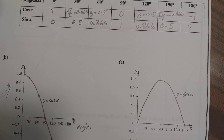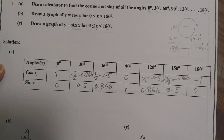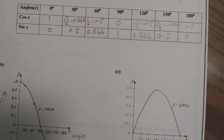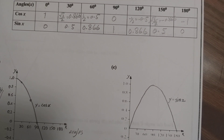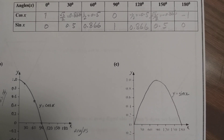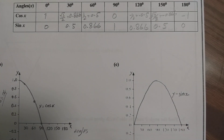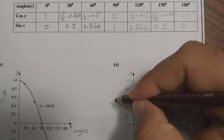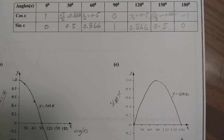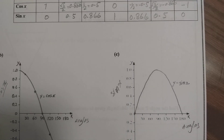For part C, draw the graph of y = sin x. Take the values again: the angles go on the x-axis and the sine values go on the y-axis.